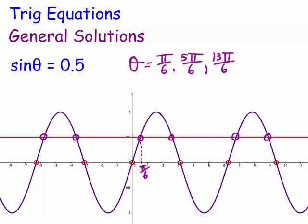Continuing the pattern: going backwards from 3π by π/6 gives 17π/6. So these are just some of the solutions, and you can go backwards as well.